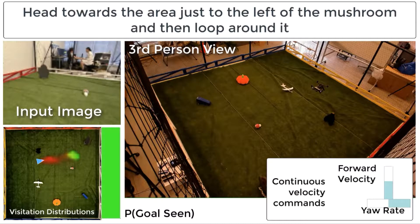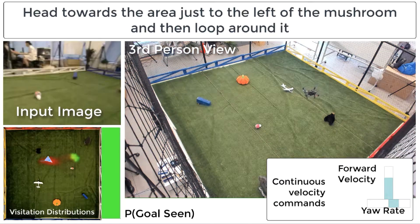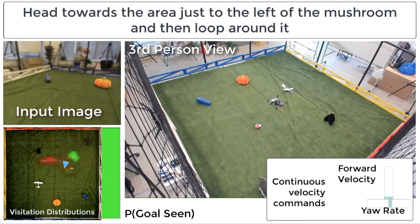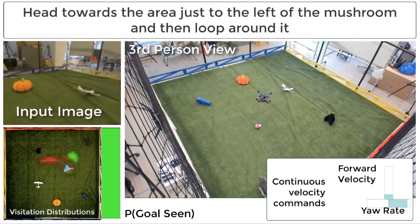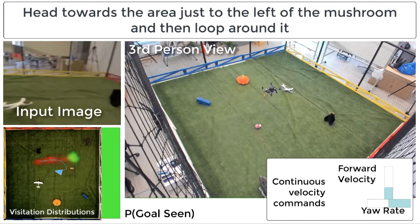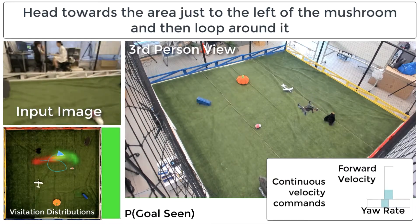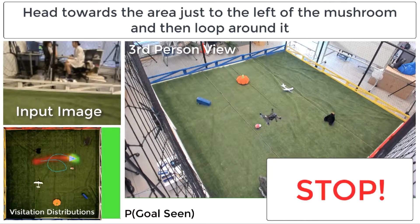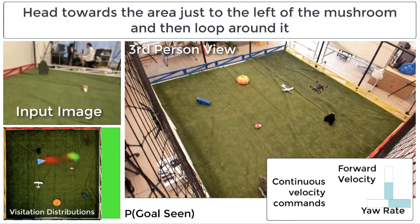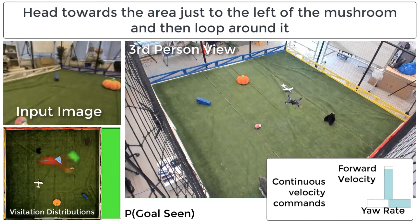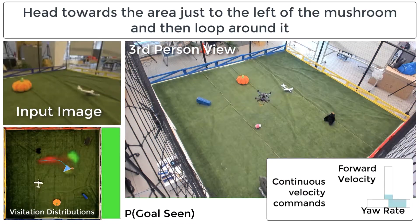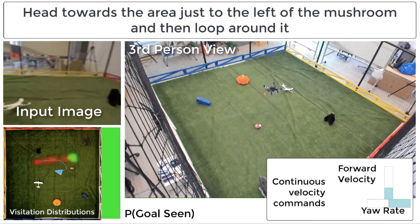In this example, the instruction is 'Head towards the area just left of the mushroom and then loop around it.' This is a fairly common failure example. The agent predicts correctly that it should fly to the left side of the mushroom, but does not quite capture the motion of looping around it. During execution, a spurious prediction causes the agent to veer to the right, but ultimately the agent recovers from this behavior in a 360-degree turn and successfully reaches the predicted goal location.